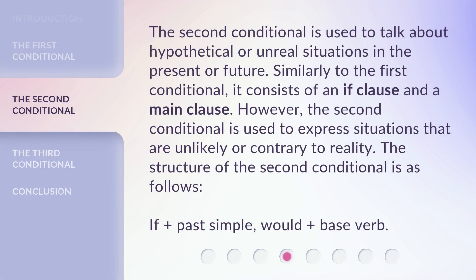The second conditional is used to talk about hypothetical or unreal situations in the present or future. Similarly to the first conditional, it consists of an IF clause and a main clause. However, the second conditional is used to express situations that are unlikely or contrary to reality. The structure of the second conditional is: if plus past simple, would plus base verb.